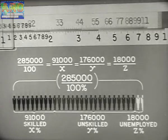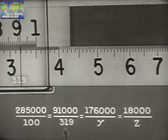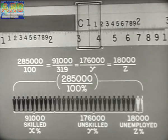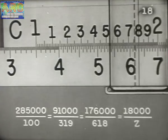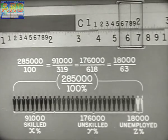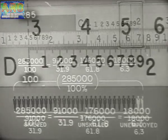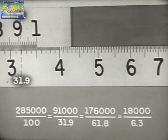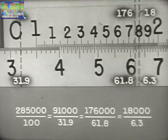To 1 on D, set 285 on C. Under 91 on C, read X as 31.9. Since 176 is beyond the body, shift to the other index. Under 176 on C, read Y as 61.8. Under 18 on C, read Z as 6.3. As a final step, add the decimal points. Notice that with any setting of the rule, all coinciding readings are in the same ratio. With this setting, 285 is to 100, as 91 is to 31.9, and with a change of index — which leaves the ratio unchanged — as 176 is to 61.8, as 18 is to 6.3.